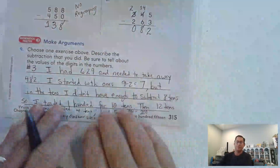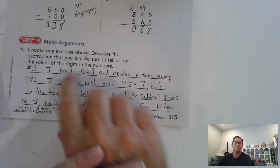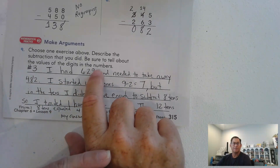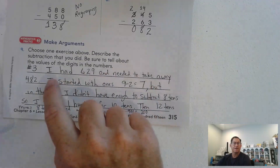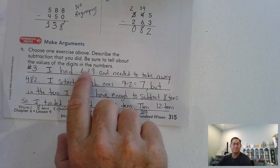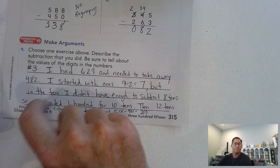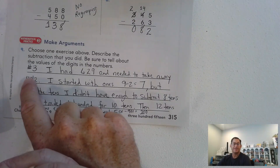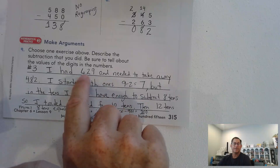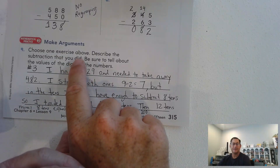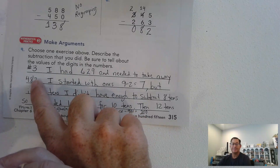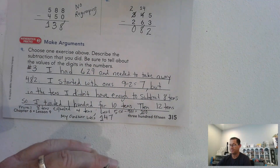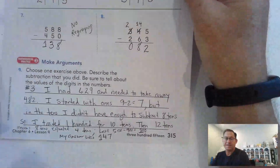So I basically explained how I solved problem three: 629 minus 482. I started in the ones — 9 minus 2 gave me 7. When I tried to take 8 tens from 2 tens there weren't enough, so I borrowed from the 600, leaving 500, and traded for 10 tens. 12 minus 8 gave me 4 tens. Then 500 minus 400 gave me 100. Choose any of those exercises and explain it similarly.